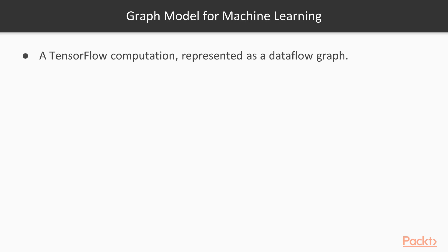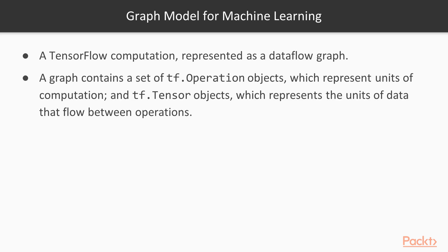In TensorFlow, every operation or every computation is represented as a dataflow graph. A graph contains a set of operations called TF operations as objects, which represent different units of computations, and TF tensors which represent units of data that flow between operations. Whenever we want to perform an operation using TensorFlow, we have to execute this graph.